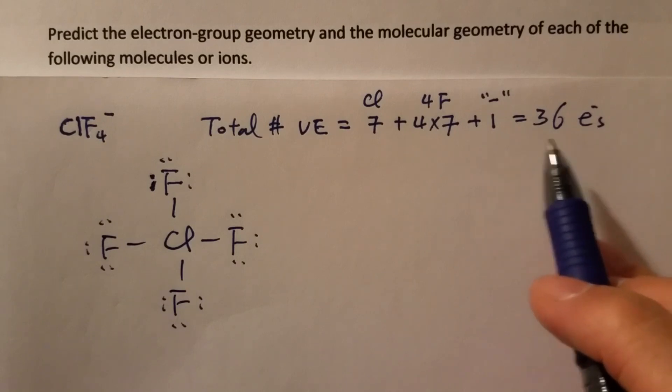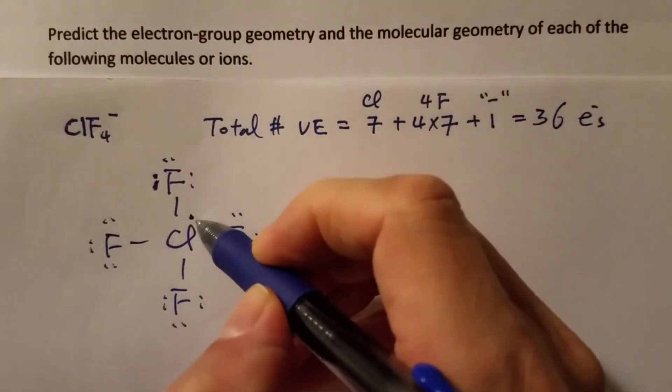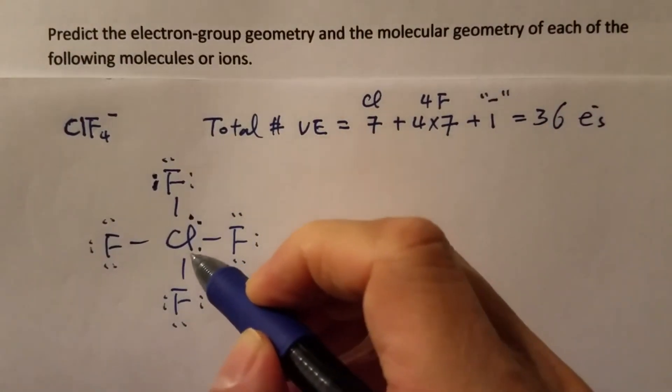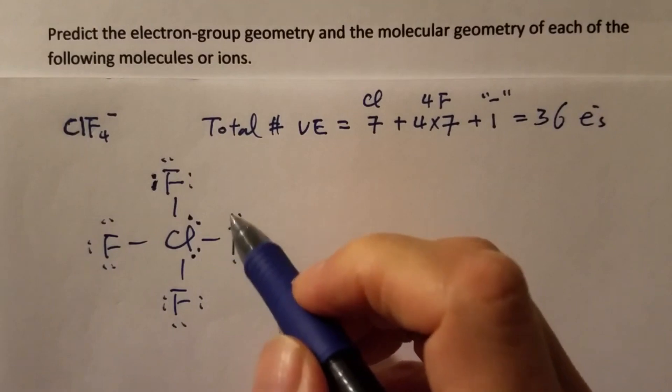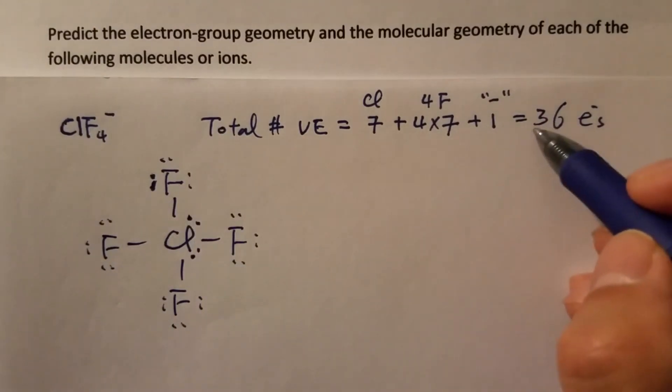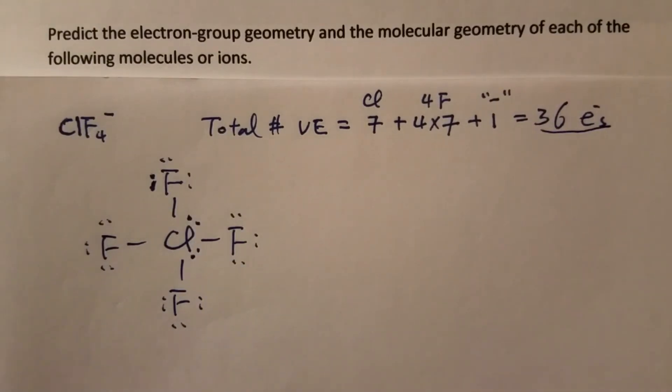They can only go to the central atom, so chlorine gets another one, and another one. Therefore 32 plus 4, that's all 36 electrons have been assigned.